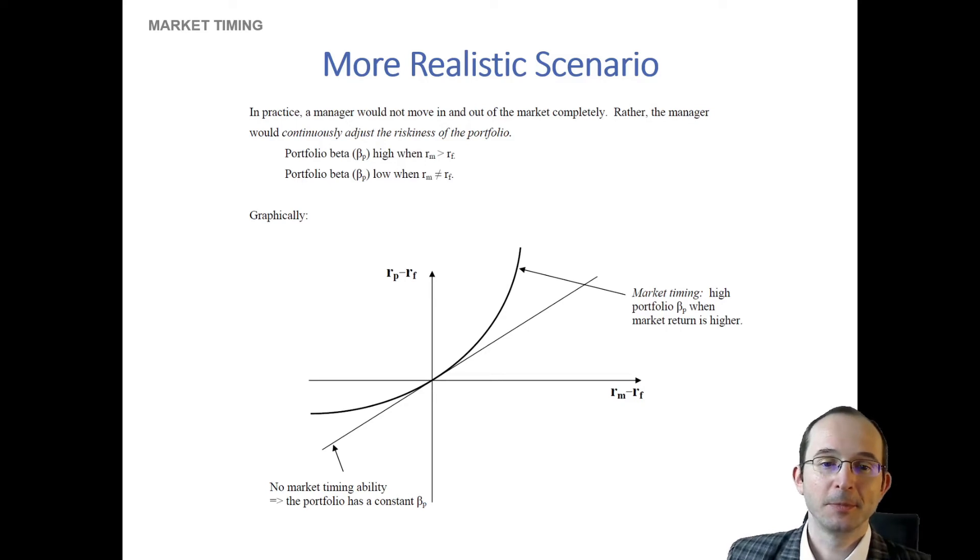But in the real world, you might not have this sort of completely binary investment strategy. You might actually simply move out of the market partially when you think bad times are coming and move into the market more aggressively when you think good times are ahead. And this is something that if you read financial news, you'll often hear of famous investors either increasing or decreasing their exposures to risk assets because they're making these sorts of market timing claims.